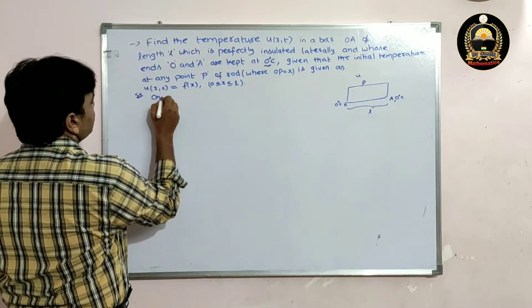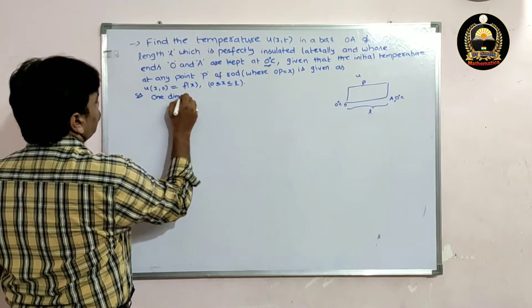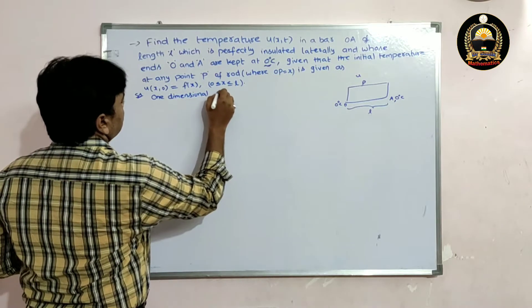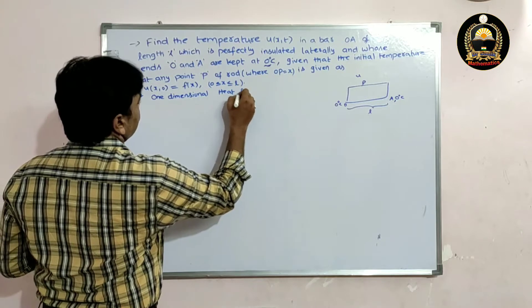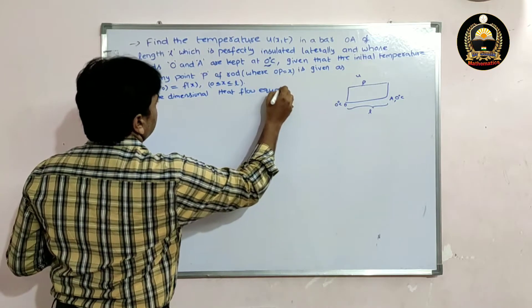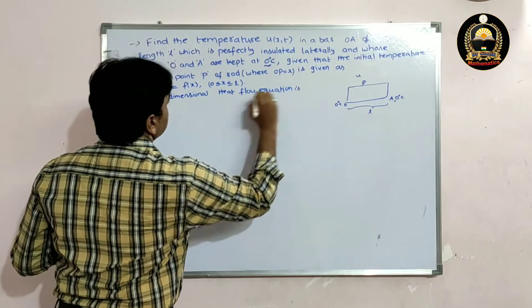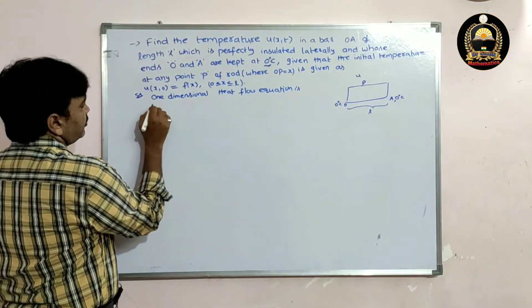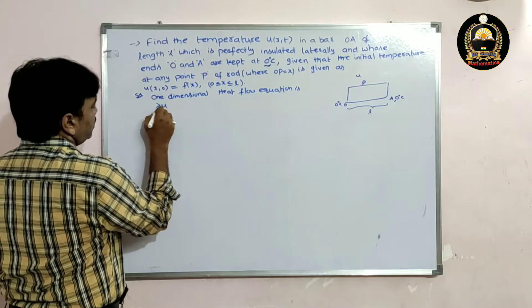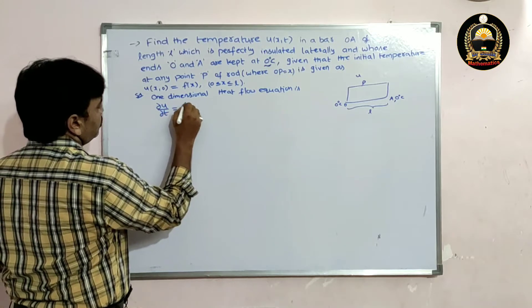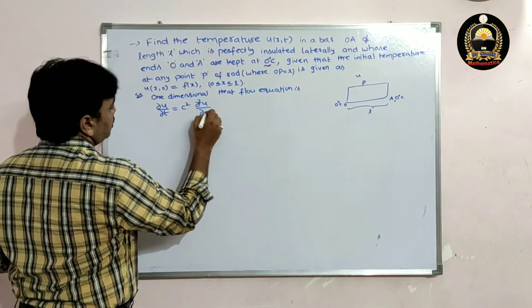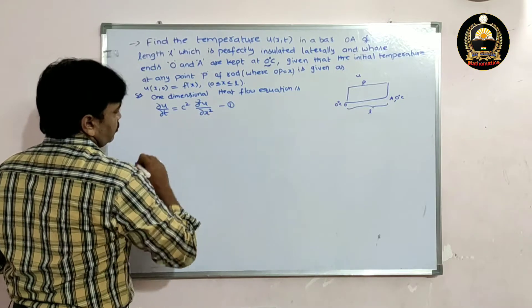The one-dimensional heat flow equation is: ∂u/∂t = c² · ∂²u/∂x². This is equation number one.